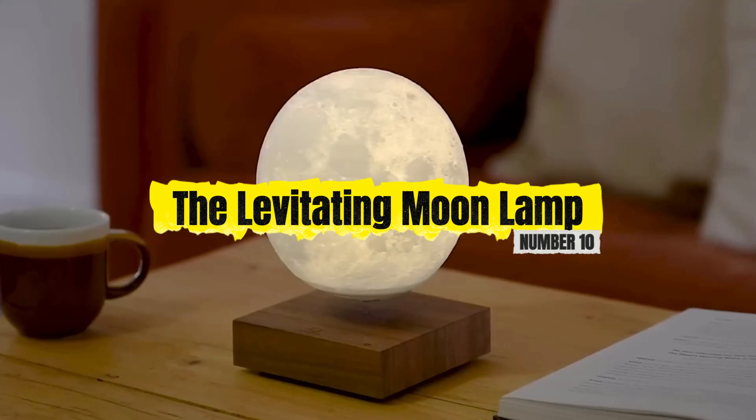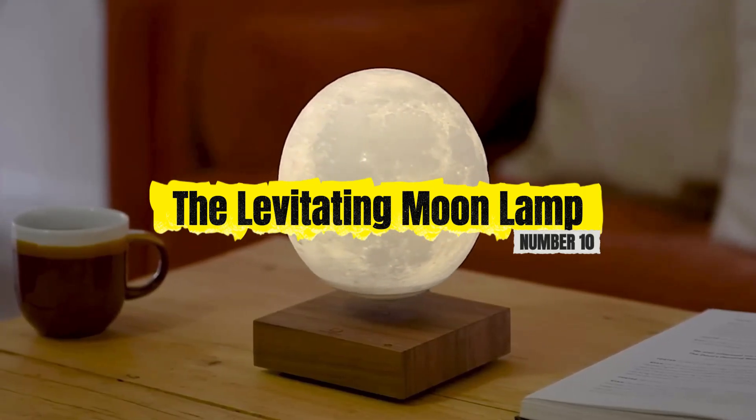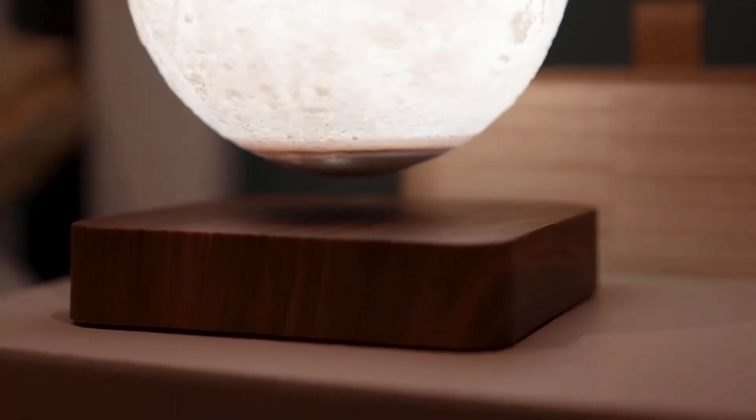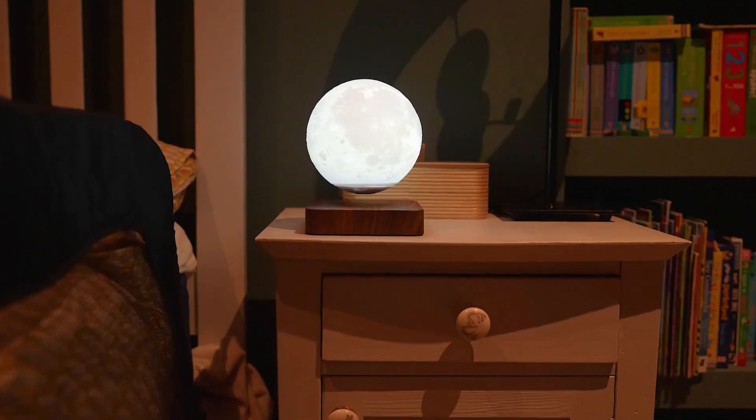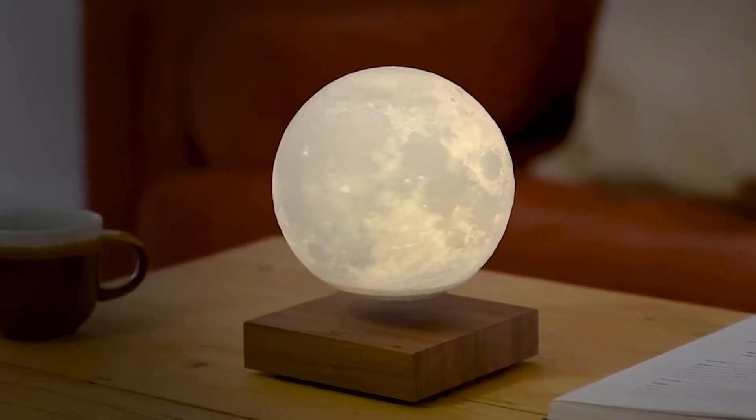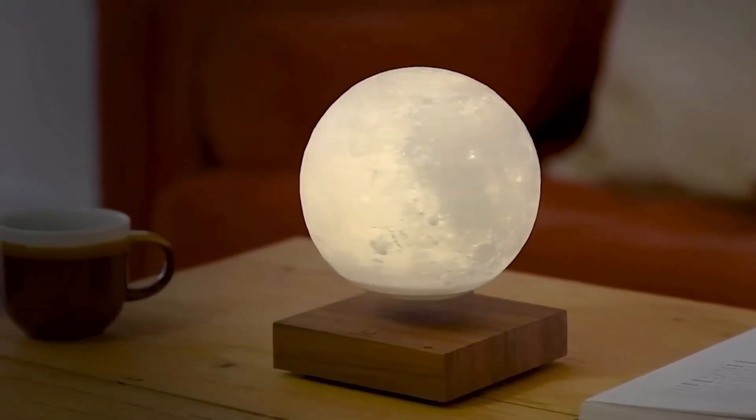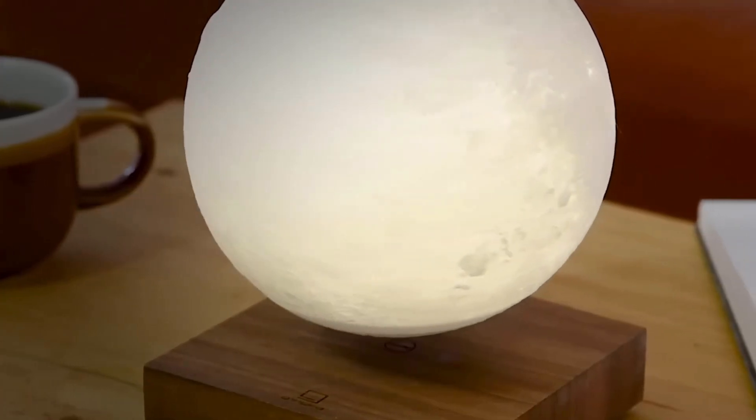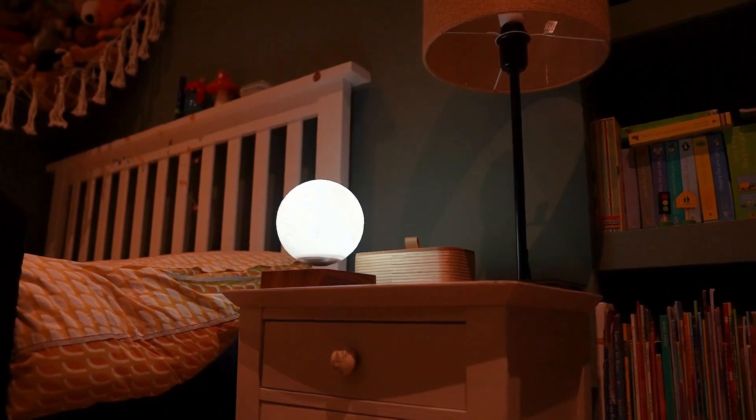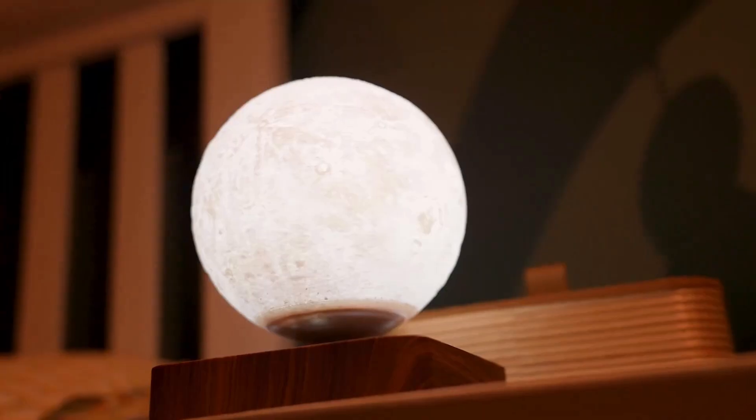Number 10. The Levitating Moon Lamp. Kicking off our list is a gadget that lets you hold the moon in your hands, but what if it could float there all by itself? The Levitating Moon Lamp does exactly that, hovering and rotating in midair with no strings attached. This isn't magic. It's a clever application of magnetic levitation.